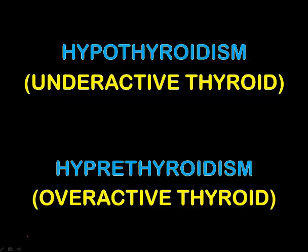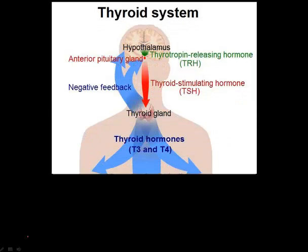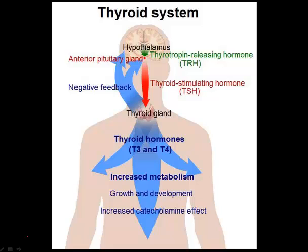Now, before we go into the details, I would suggest that every medical transcriptionist understand the basic anatomy and physiology of the thyroid system. From a medical transcriptionist perspective, when we look at the thyroid system: you have the hypothalamus in the brain, which secretes a hormone called the thyrotropin-releasing hormone, which acts on the anterior pituitary, the pituitary gland. And, it stimulates the production of TSH, or the thyroid stimulating hormone.